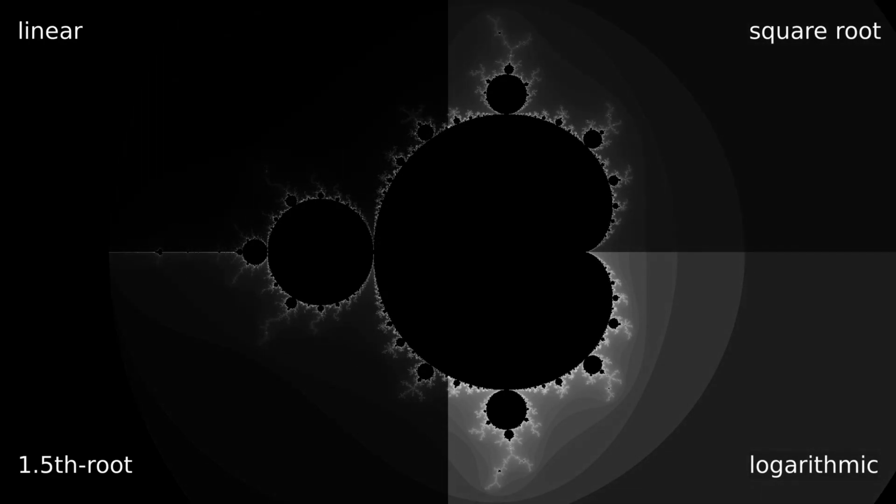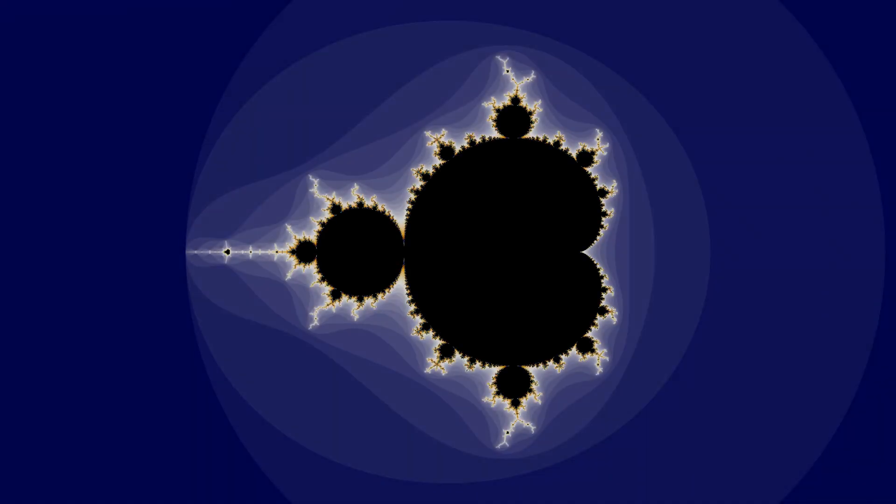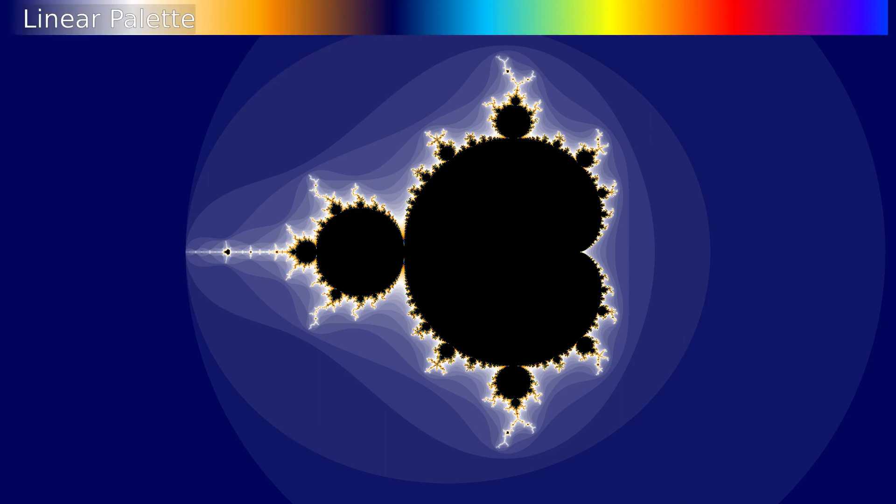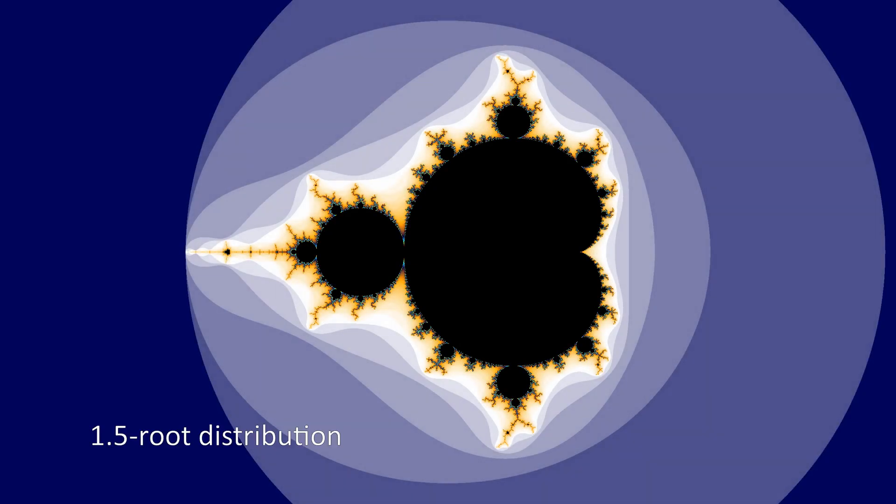Let's have a look at different palettes and different color distributions. Here you see a color palette with a linear distribution. As you can see, you can't actually see most of the palette because it's all squeezed near the edge of the Mandelbrot.